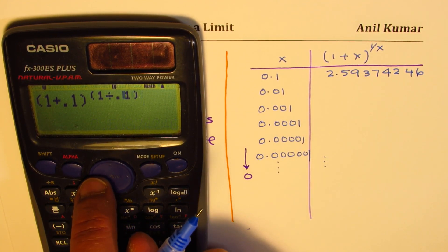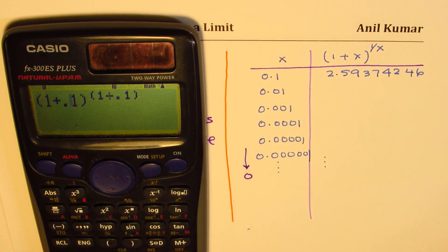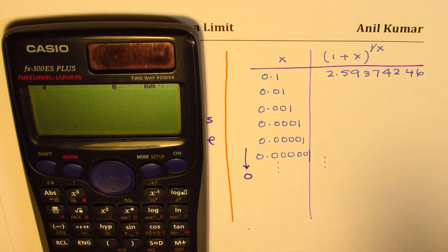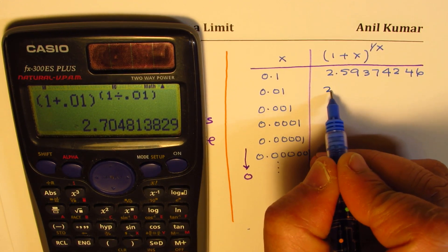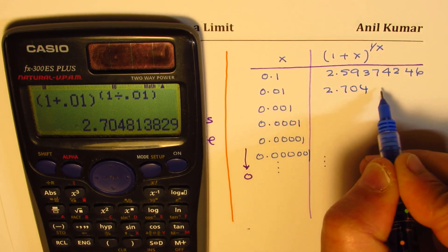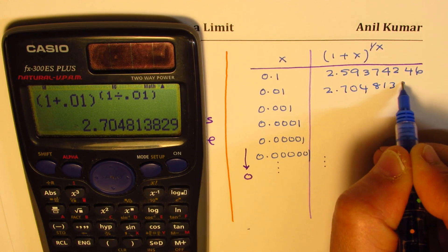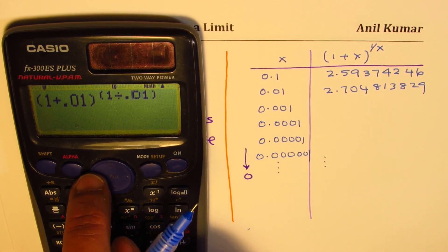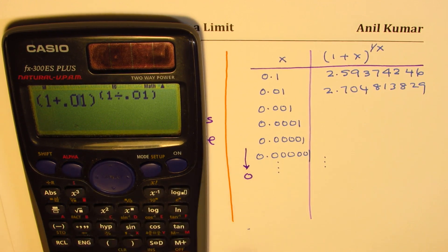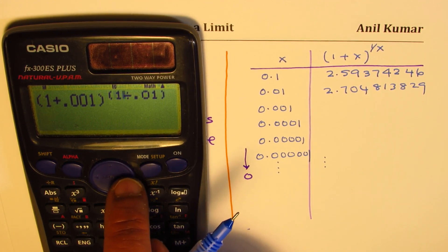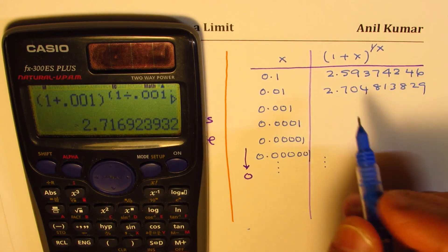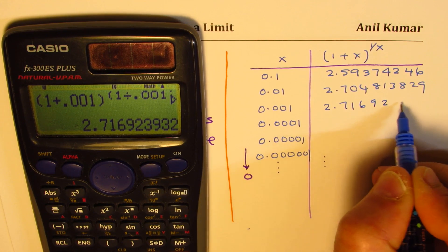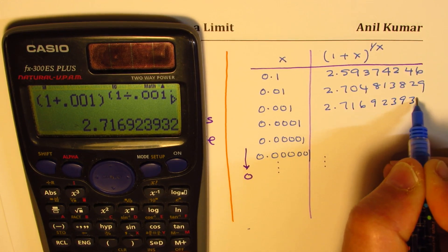Now we change the value from 0.1 to 0.01, which gives us 2.704813829. Changing it further to 0.001 gives us 2.716923932.